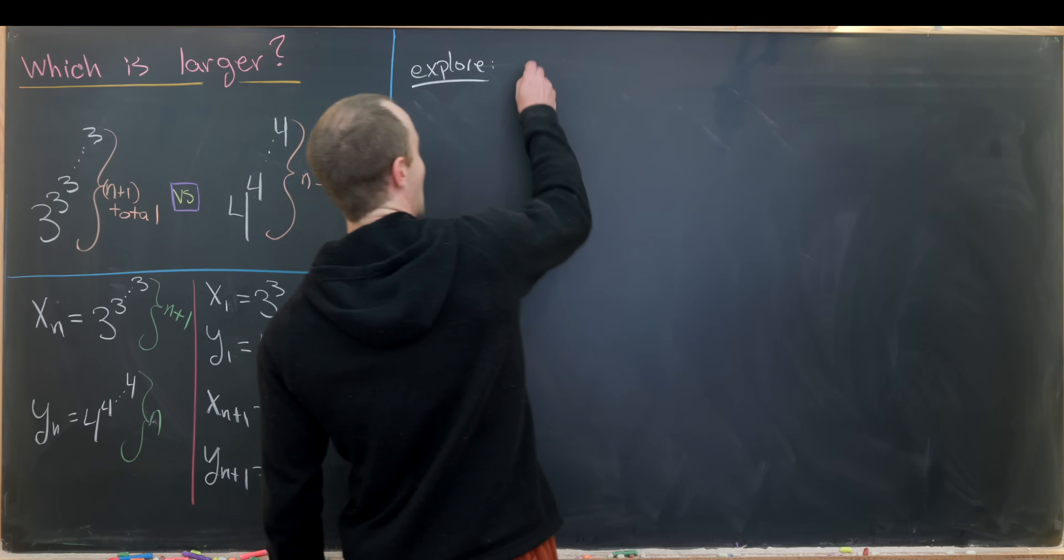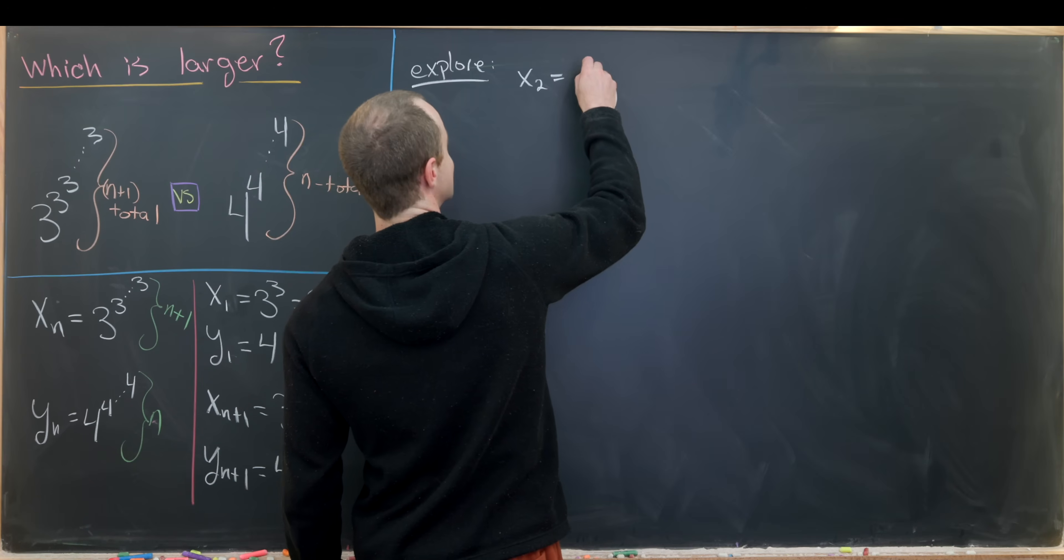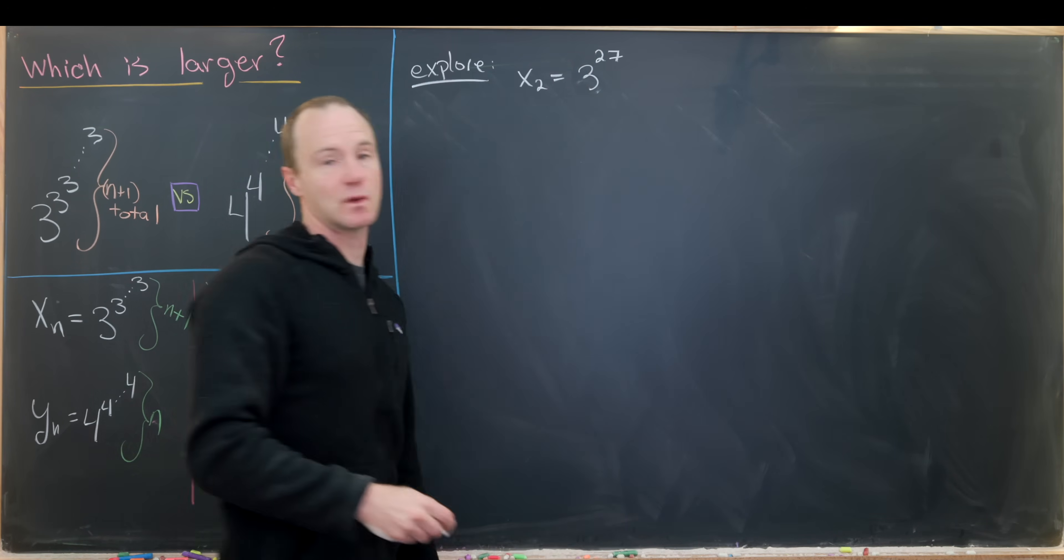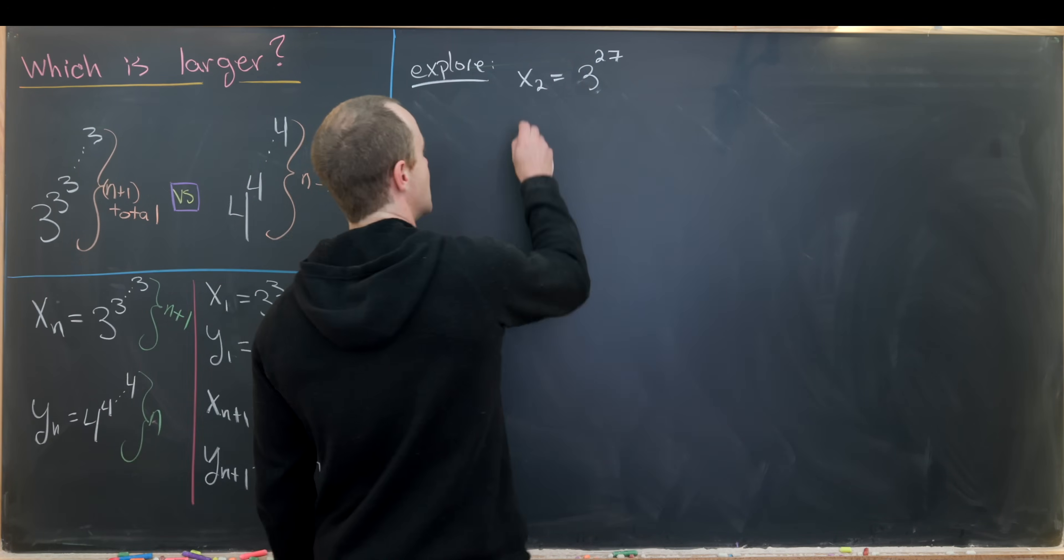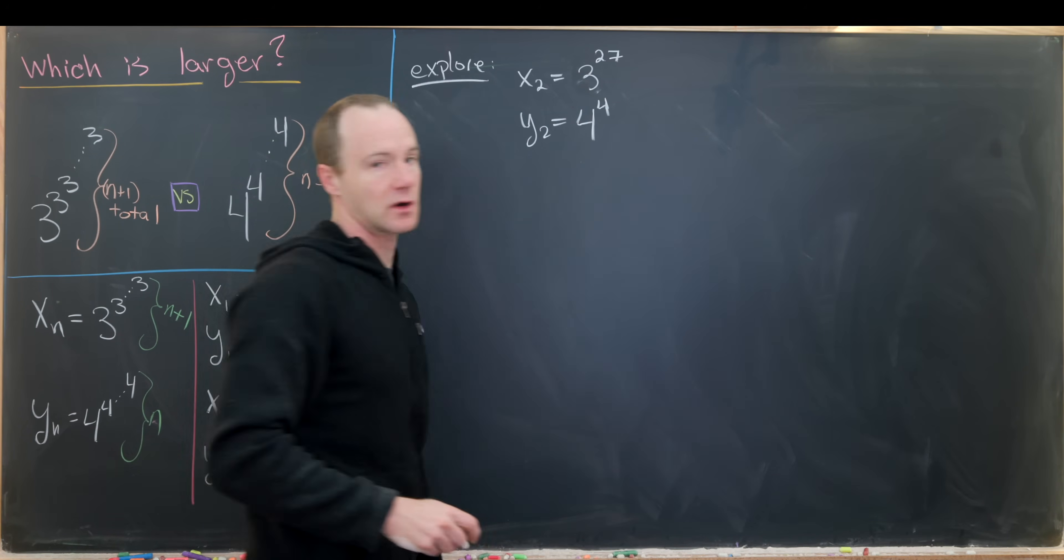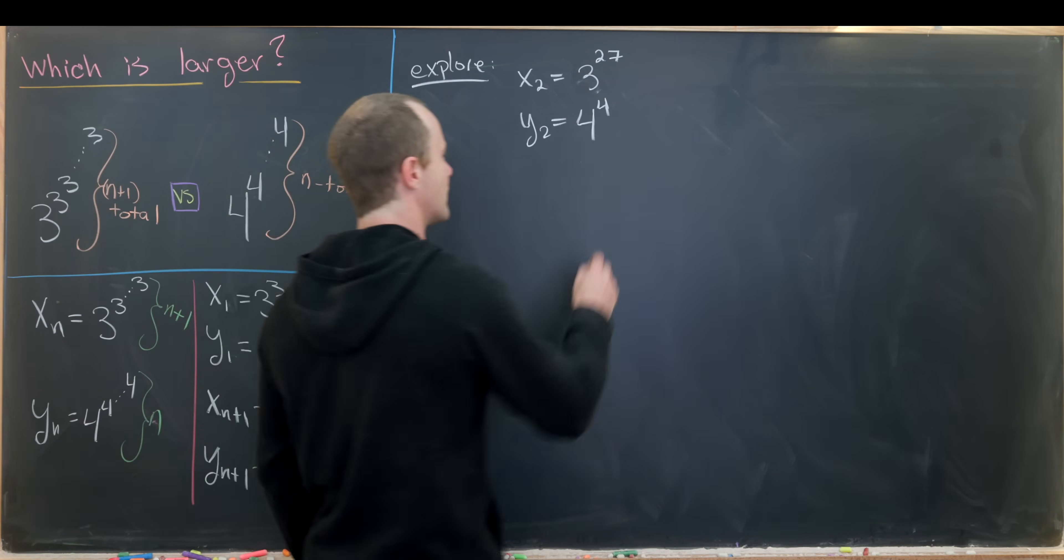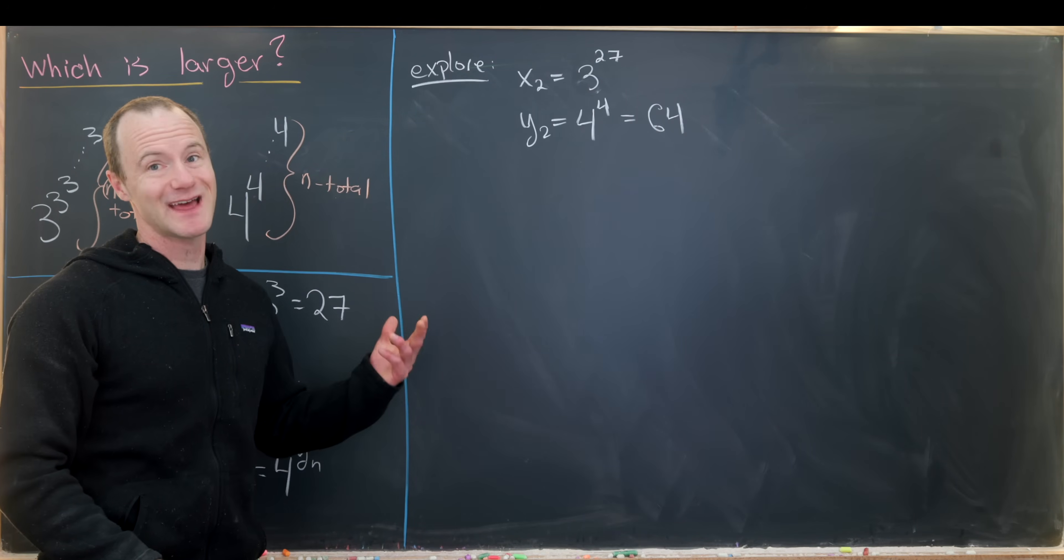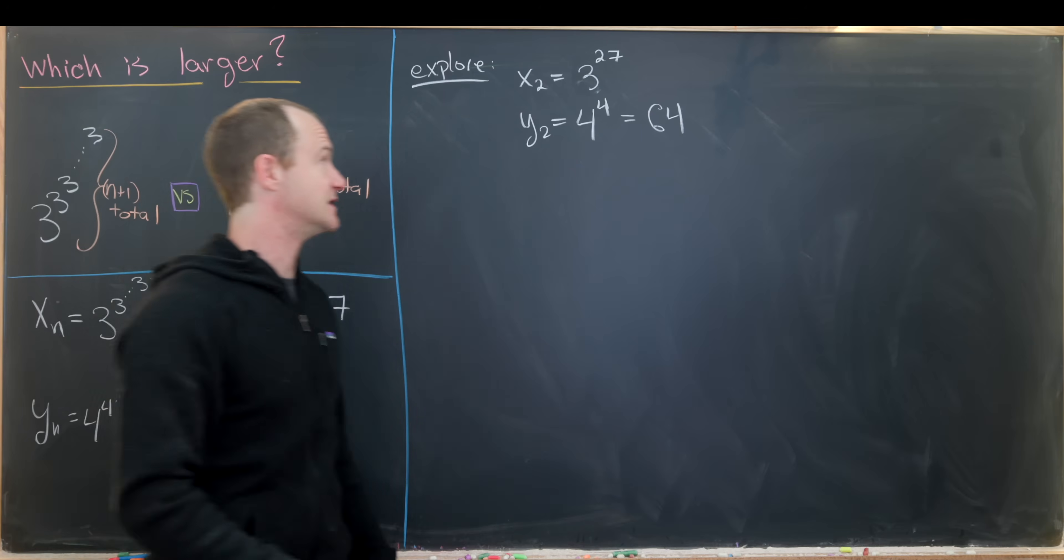So let's see x2. Well, that's going to be equal to 3 to the x1, so that's 3 to the 27. And then y2 will be equal to 4 to the 4. But let's notice that 4 to the 4 is just 256. Whereas 3 to the 27 is much bigger than 256.